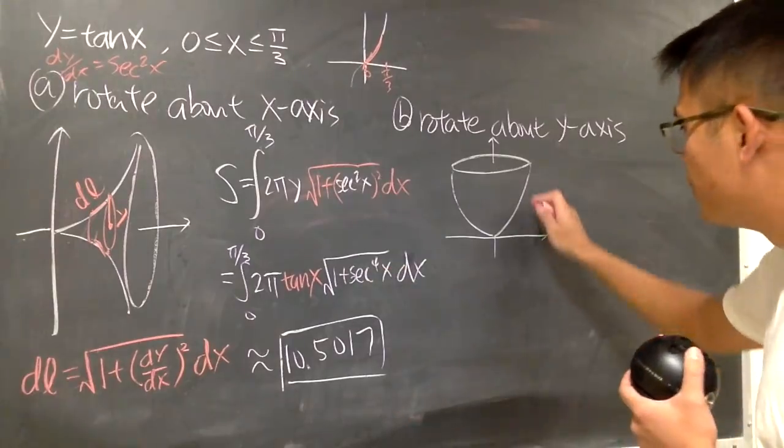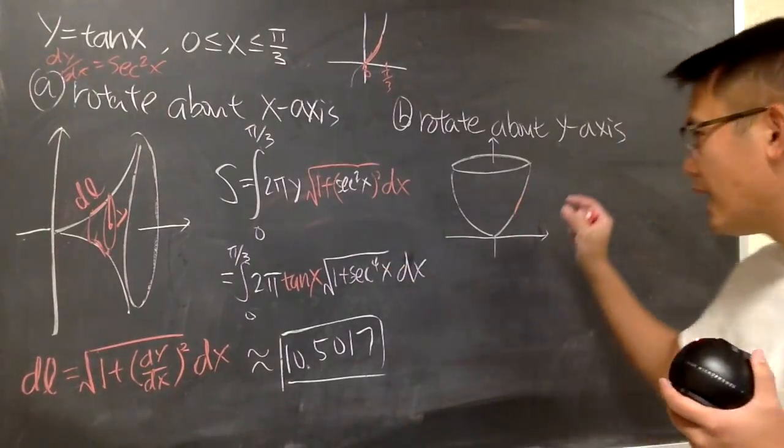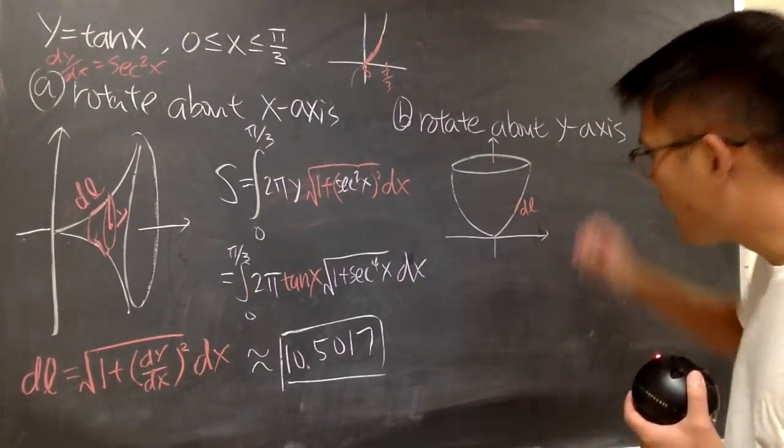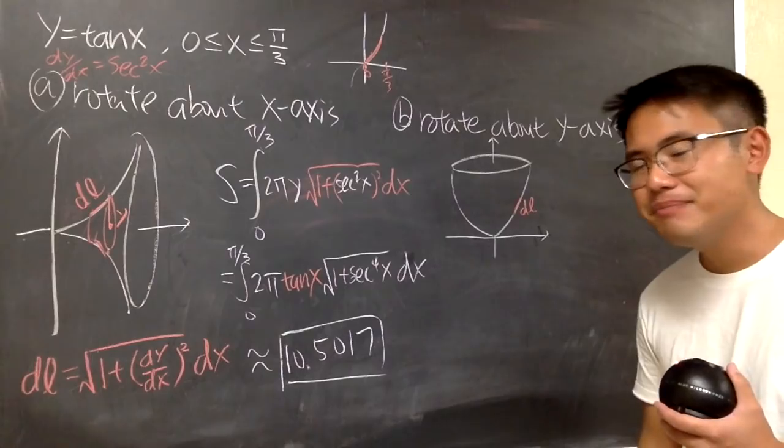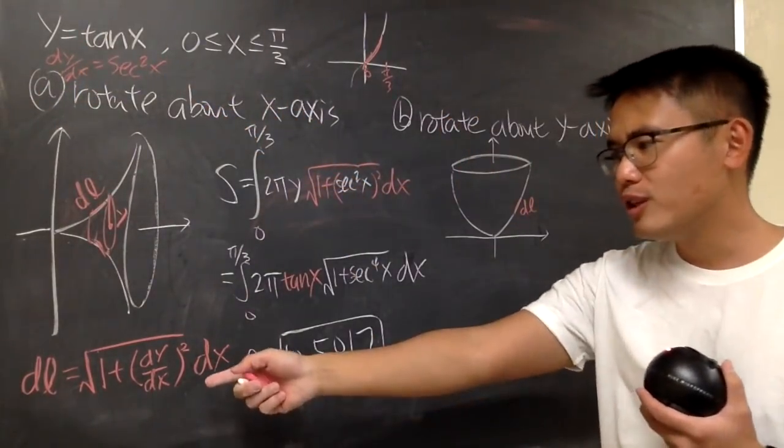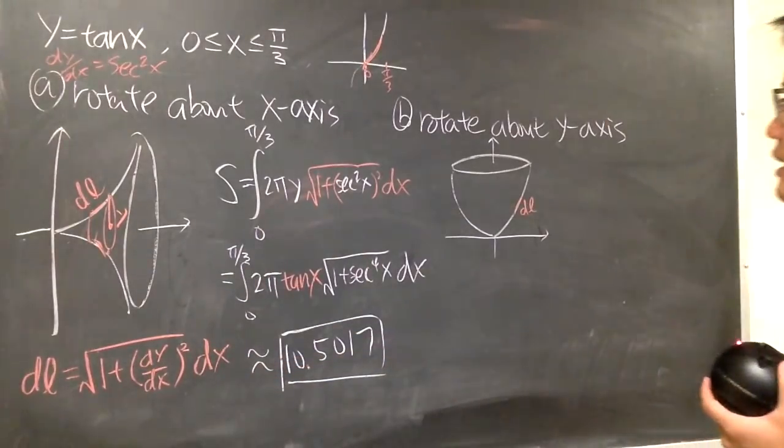Anyway, do the same thing. You still have to consider a little straight line on the curve. And this is, again, dl. And because we're still talking about the same curve, y is a function of x, we will still be using that.